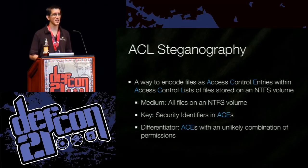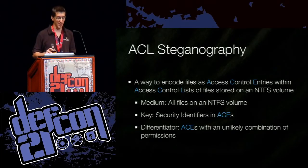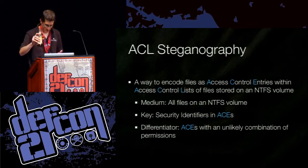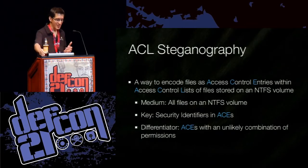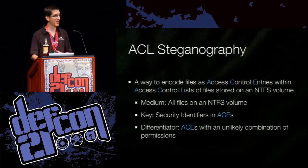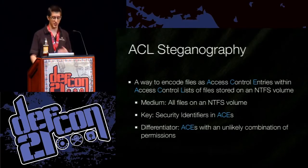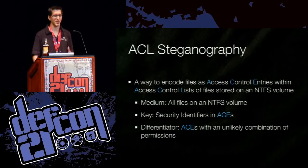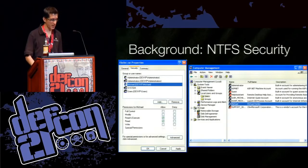ACL steganography is a way to encode files as access control entries within an access control list on a file on an NTFS file system. The medium is any file on an NTFS file system. The key is security identifiers within the access control entries. The differentiator between the message and regular content is access control entries with an unlikely combination of permissions. Before going further into how the scheme works, I want to backtrack and talk about how NTFS security works under the hood.